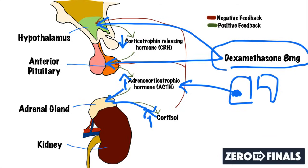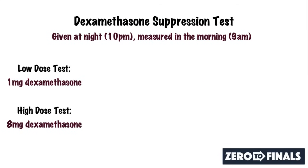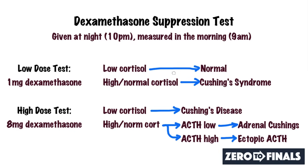Let's summarize. In the low dose test, if cortisol is low afterwards, you have a normal adrenal axis and no Cushing's. If cortisol is high or normal afterwards, this suggests Cushing's syndrome. You then proceed to the high dose test. If cortisol is low after the high dose test, that is diagnostic of Cushing's disease — a pituitary adenoma — where 8 milligrams is enough dexamethasone to suppress the adenoma, leading to a reduction in cortisol.